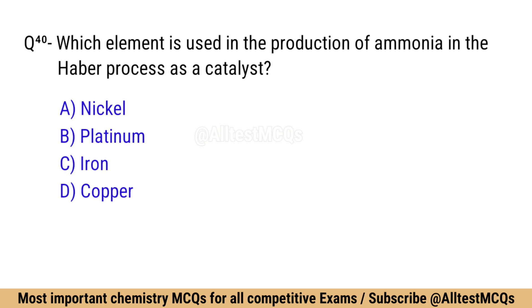Question number 40: Which element is used in the production of ammonia in the Haber process as a catalyst? Correct option is C: Iron.